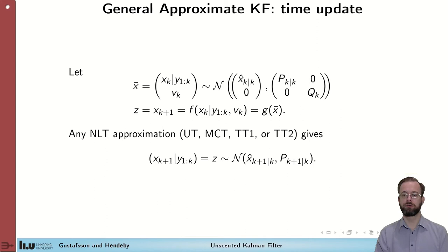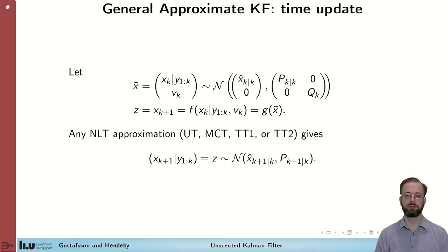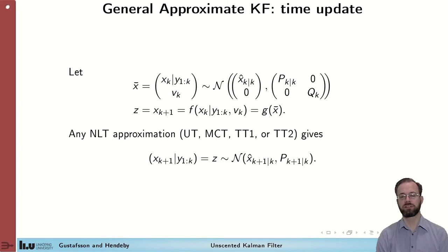Now we are ready to derive the time update in this general approximate Kalman filter. The time update is quite straightforward — we simply need to transform the state and the process noise to the next state. Stacking the variables gives a mean and a diagonal covariance matrix containing the uncertainty of the states and the process noise. We then apply the nonlinear transformation — using the unscented transform, Monte Carlo, TT1, or TT2 — and get the distribution of the predicted state: x-hat k+1 given k, and P k+1 given k.